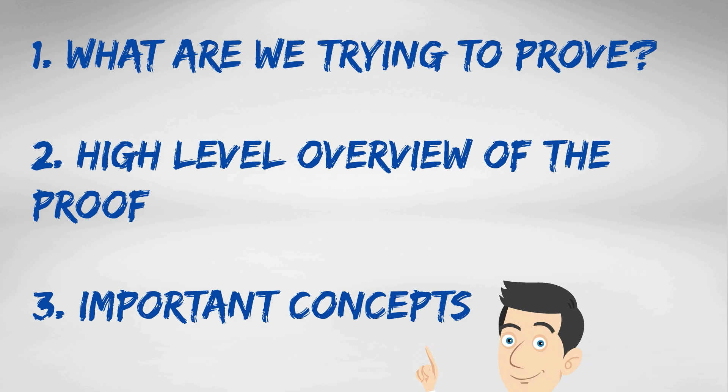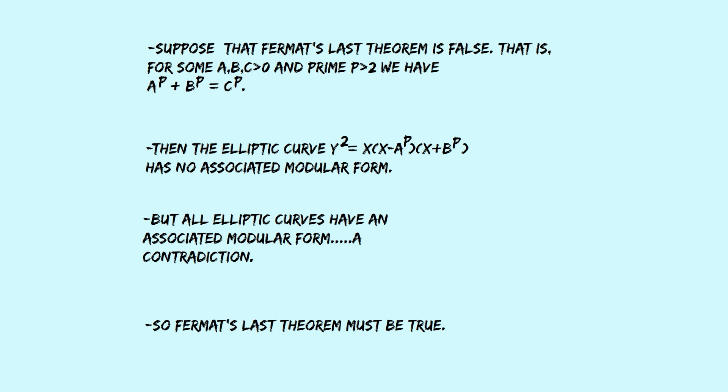Now we move to the last section, which is the important concepts. And here I want to just try and explain what some of these terms mean. What is an elliptic curve? What is a modular form? And what does it mean for an elliptic curve to be associated with a modular form?